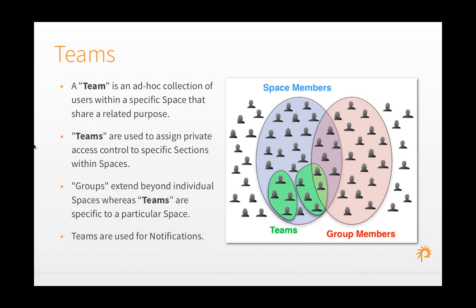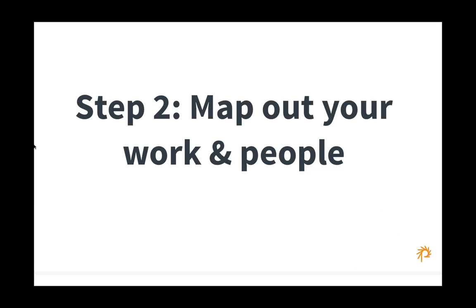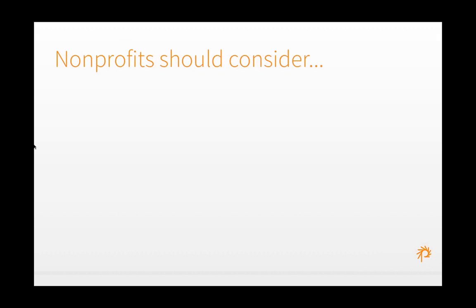In terms of people: spaces have users called members who can have special permissions such as edit and create access within a space. A group is a collection of users with related roles or interests that span across multiple spaces — for example, project managers, developers, local affiliate coordinators, or headquarters staff. Groups are used to assign access control to specific sections within specific spaces and also used for notifications. A group is very often related to a role or function.